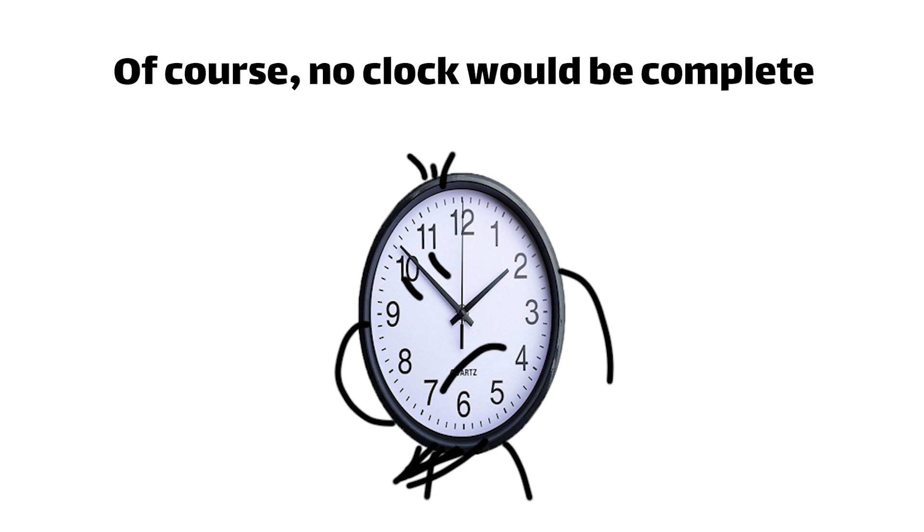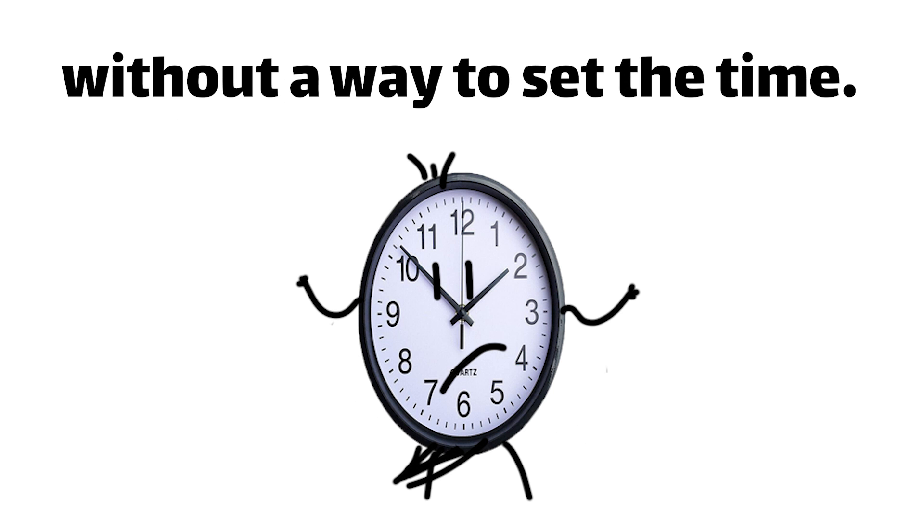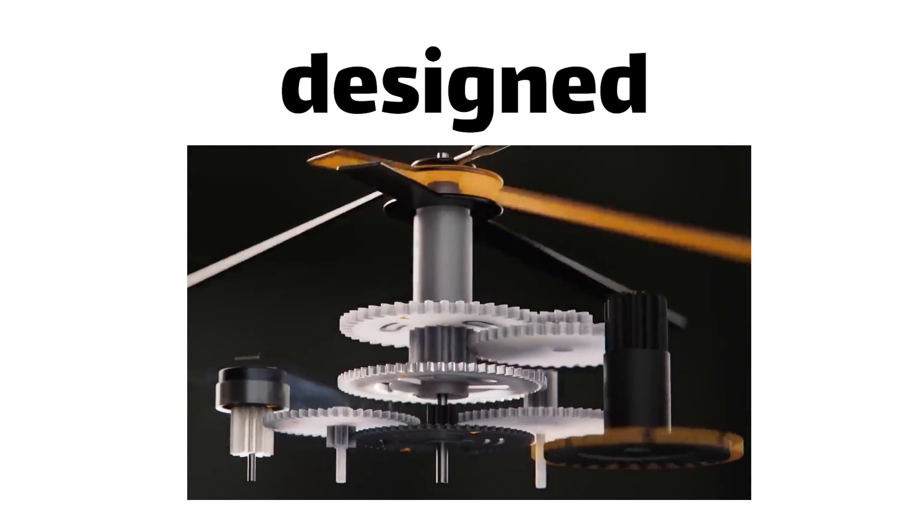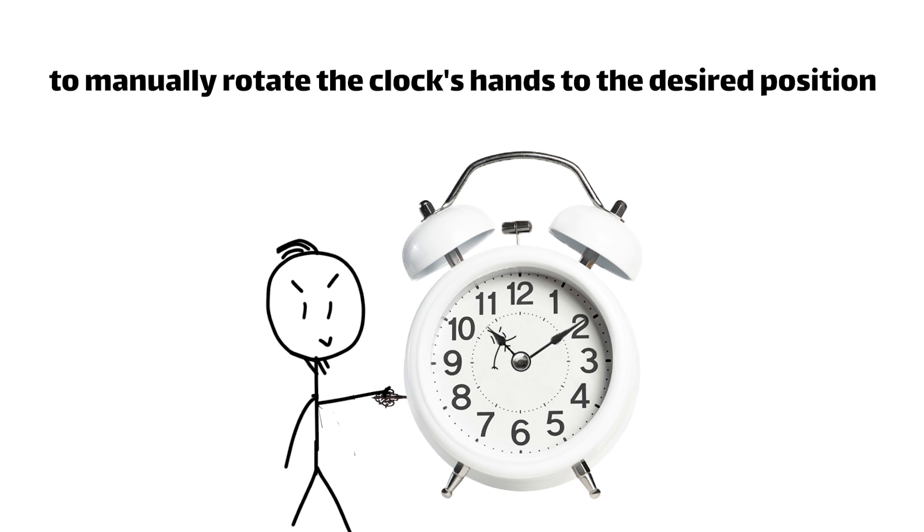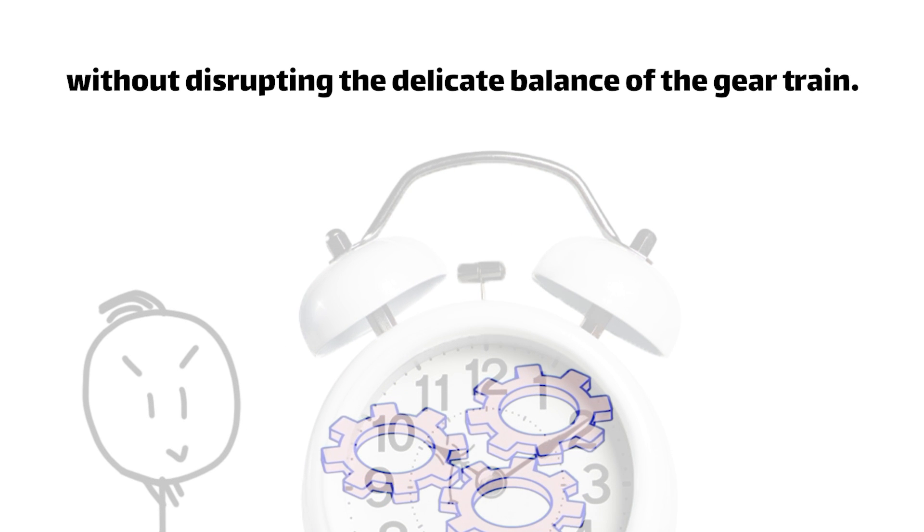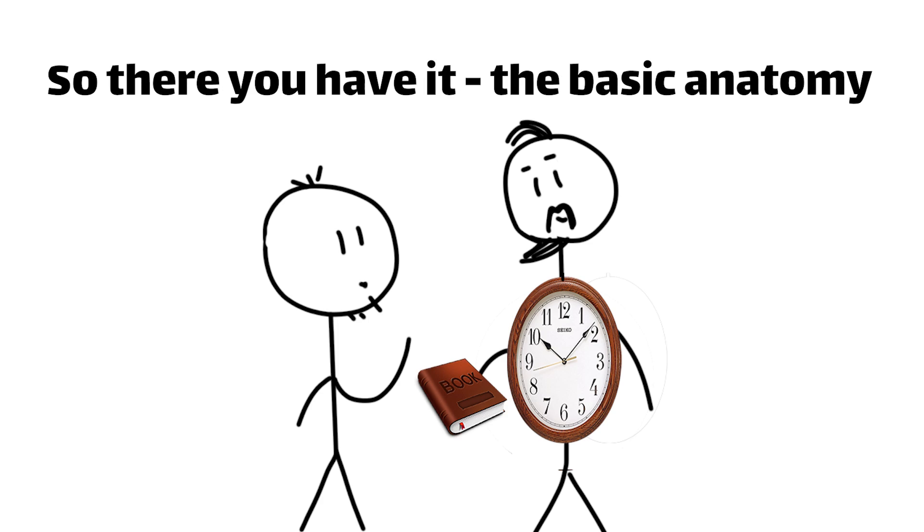Of course, no clock would be complete without a way to set the time. That's where the time-setting gear comes in. This specially designed gear allows you to manually rotate the clock's hands to the desired position, without disrupting the delicate balance of the gear train. That about sums up the basic anatomy of a humble wall clock.